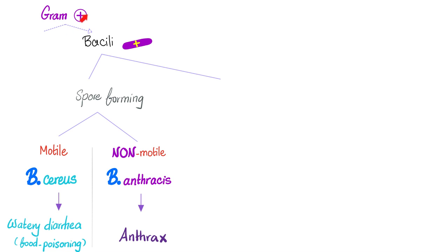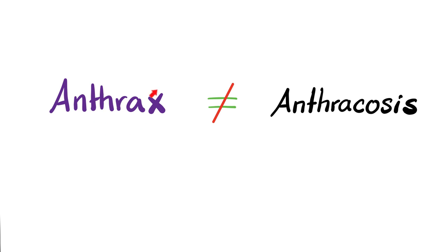Let's recap. We will talk about gram-positive bacilli that are spore-forming. Some of them are motile, such as Bacillus cereus, which causes watery diarrhea. Some are non-motile, such as Bacillus anthracis, which causes anthrax. By the way, anthrax is not the same as anthracosis — one has nothing to do with the other, except for the fact that both of them can affect your lungs, but that's a separate issue.